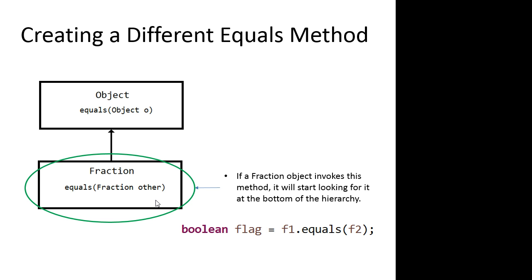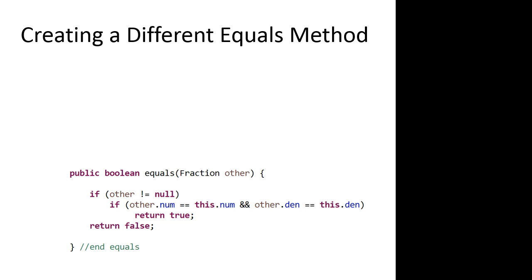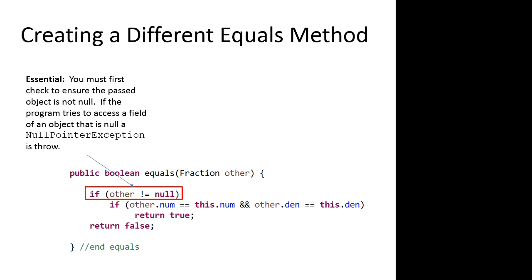This is what your equals method might look like. We're going to compare the passed numerator to the implied numerator and the passed denominator to the implied denominator. A couple of key things: it's essential that you must first check that the passed object is not null. This is critical. Any time you pass an object into a method, you need to check that it is not equal to null. Otherwise you will get a null pointer error — if the object is null, you'll try to access a field that doesn't exist and your program will crash.